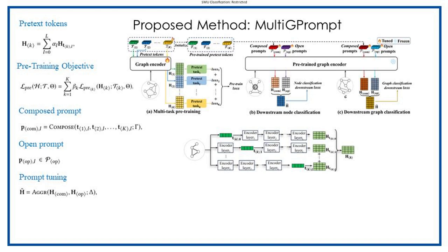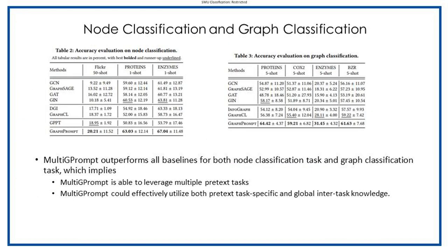To sum up, Multi-G Prompt not only leverages multiple pretext tasks to enhance the breadth of pre-trained knowledge in a synergistic manner, but also utilizes both pretext task-specific and global inter-task knowledge. We conducted extensive experiments on six public datasets and demonstrated that Multi-G Prompt significantly outperforms various state-of-the-art baselines. Thanks for listening.